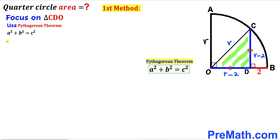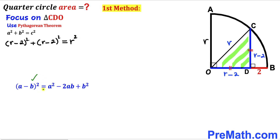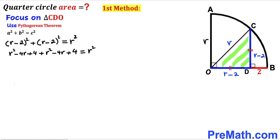Let's fill in the Pythagorean formula: (r minus two) squared plus (r minus two) squared equals r squared. Recalling the identity (A minus B) squared equals A squared minus 2AB plus B squared, we expand each binomial to get r squared minus 4r plus 4, plus r squared minus 4r plus 4, equals r squared. The two r squared terms cancel, and combining like terms gives us r squared minus 8r plus 8 equals zero.